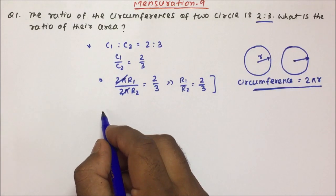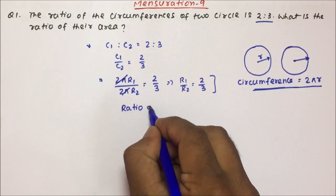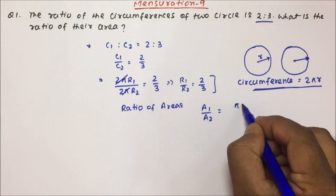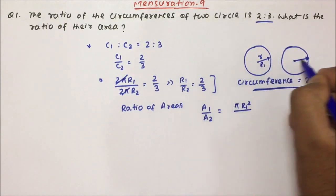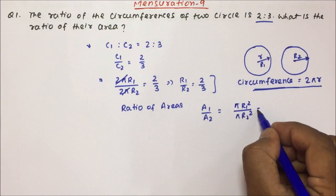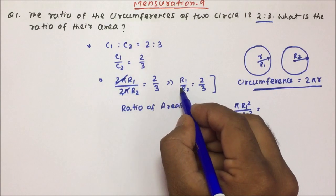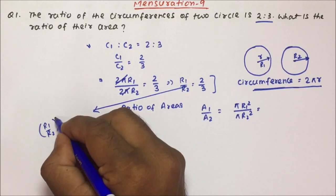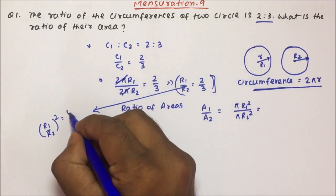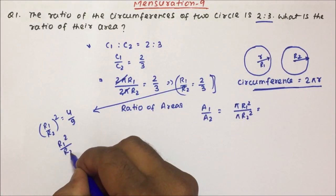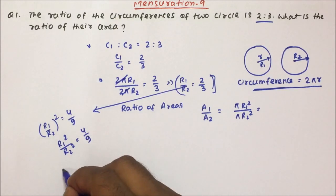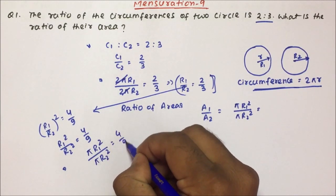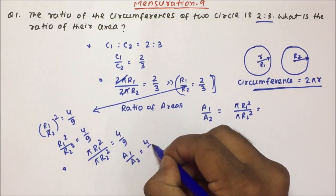They are asking what is the ratio of their areas. So the ratio of areas: A1 divided by A2 will be equal to πR1² divided by πR2². Pi and pi get cancelled. If you square both sides of the radius ratio 2 by 3, it becomes 4 by 9. So R1² divided by R2² equals 4 by 9. If you multiply and divide by π, this becomes the area. So A1 by A2 equals 4 by 9.